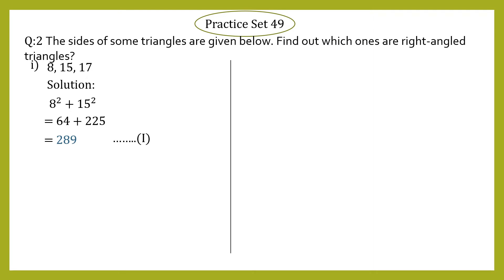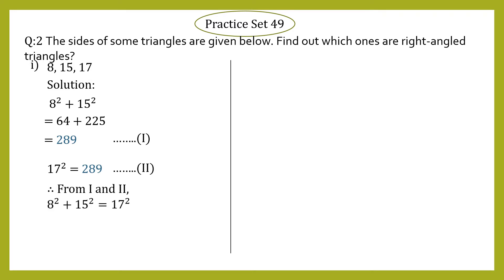Now let's take the square of the largest side. The largest side is 17, so 17² = 289. This can be taken as equation 2. Now in equation 1 and 2, we can see that 8² + 15² and 17² both equal 289.